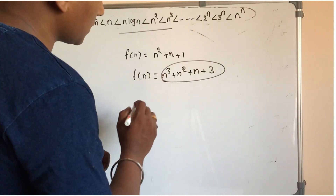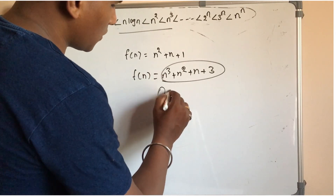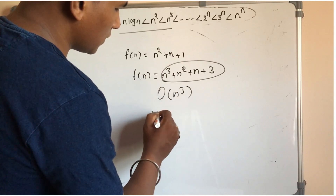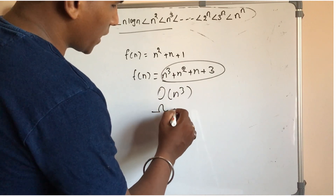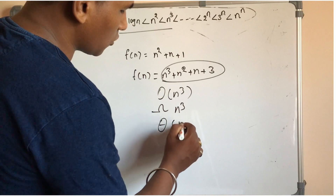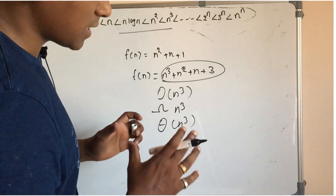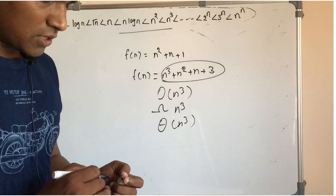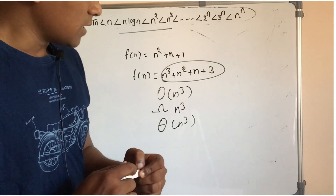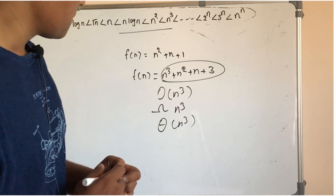How does asymptotic notation represent? It can be big O of n cube, omega of n cube, or theta of n cube. It is a common asymptotic notation. There are three types.